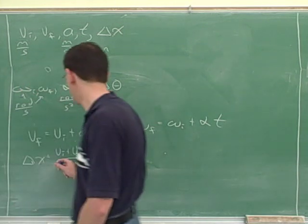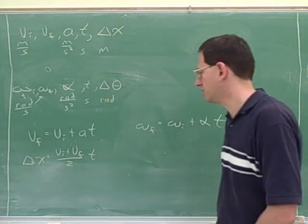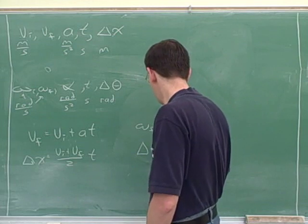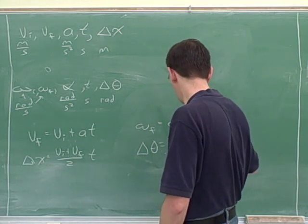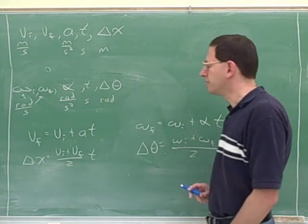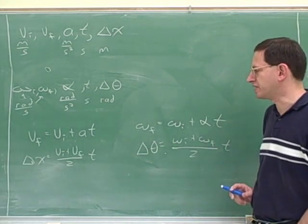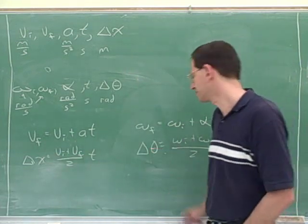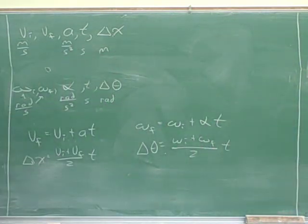This is another linear kinematics equation: delta x equals v initial plus v final over 2 times t. What would be the rotational analogy to that? Delta theta equals omega initial plus omega final over 2 times t. Good. And again, the one that's hardest for students to remember is that the analog for displacement is angular displacement.